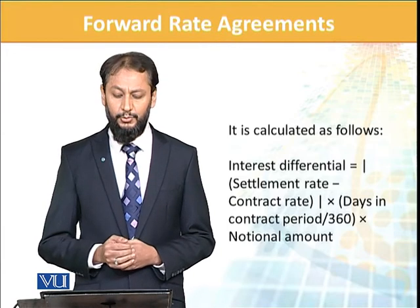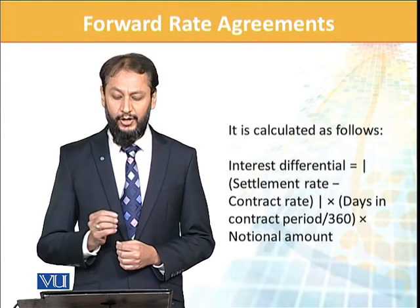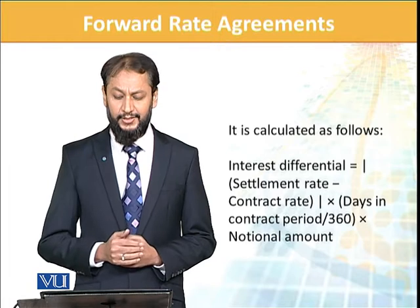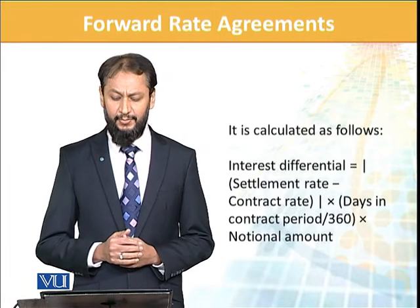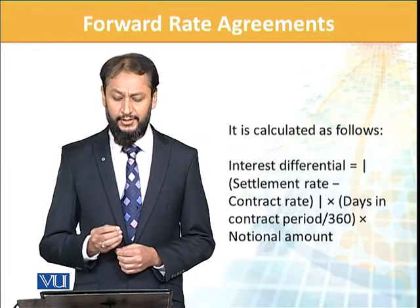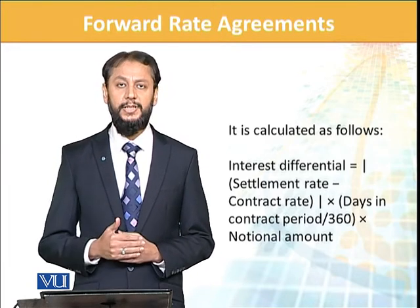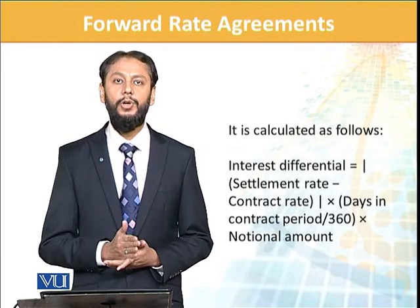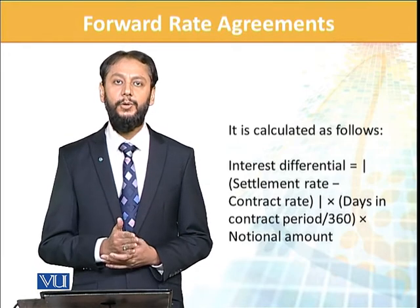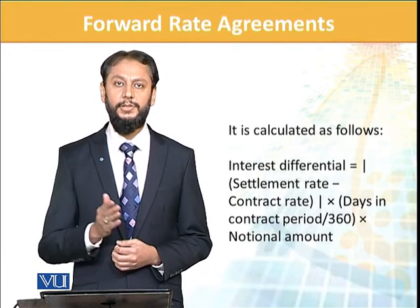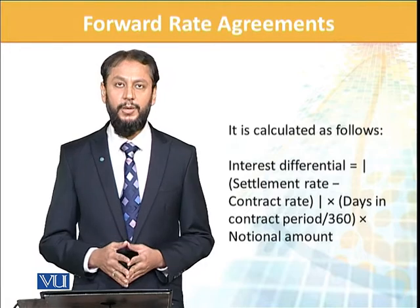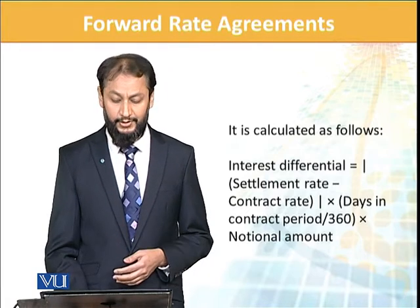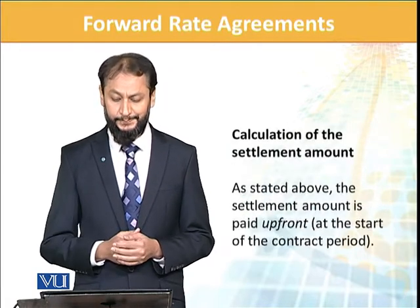Divided by 360 — یہ اس لیے ہم کر رہے ہیں 360 سے time proportion — کیونکہ settlement تو full period سے پہلے ہو رہی ہے اس لیے اس کی present value لانا ضروری ہے، اور notional amount سے آپ اس کو calculate کرتے ہیں — تو interest rate difference آ جاتا ہے۔